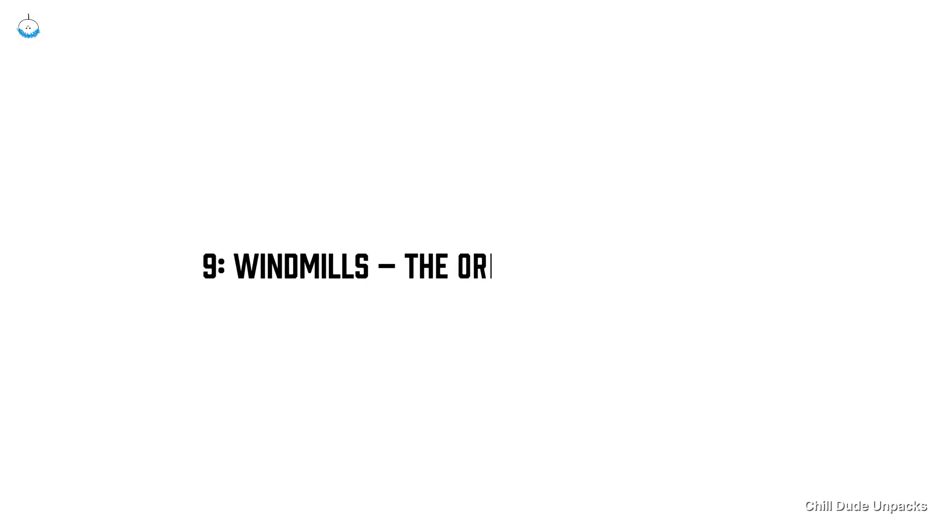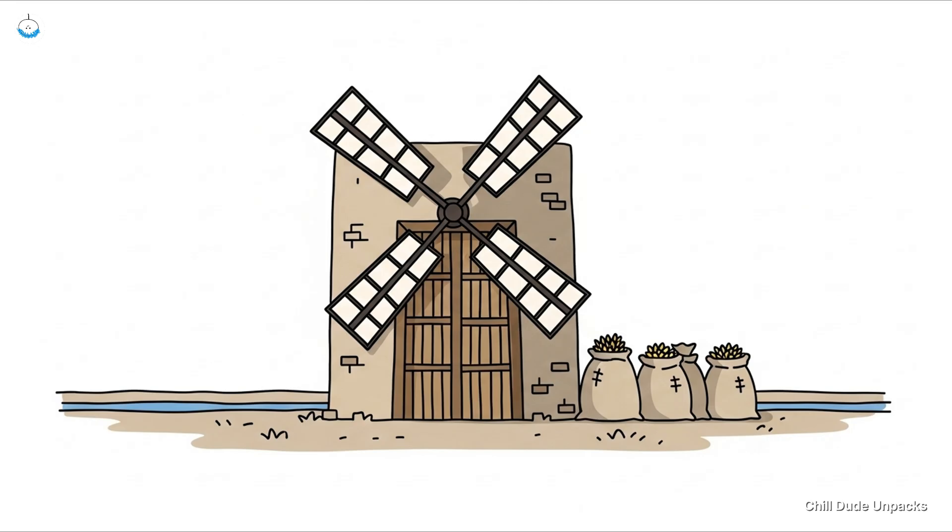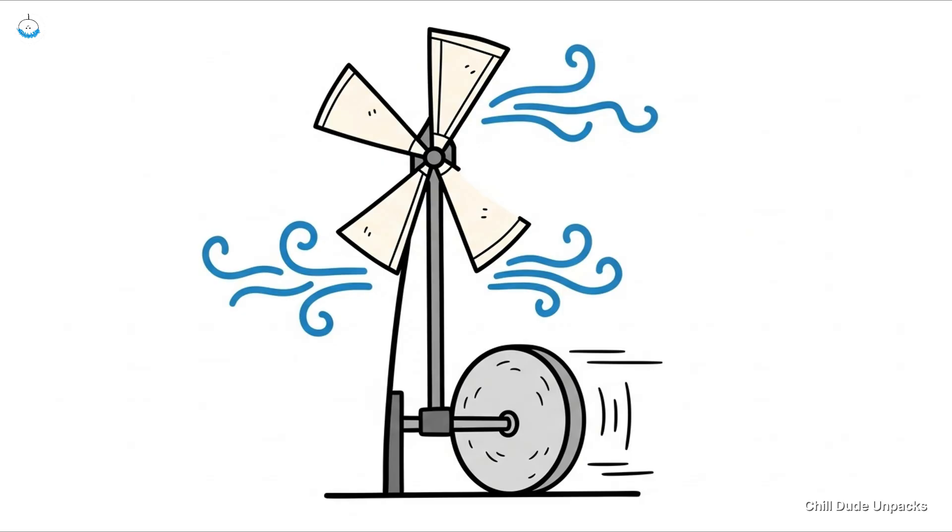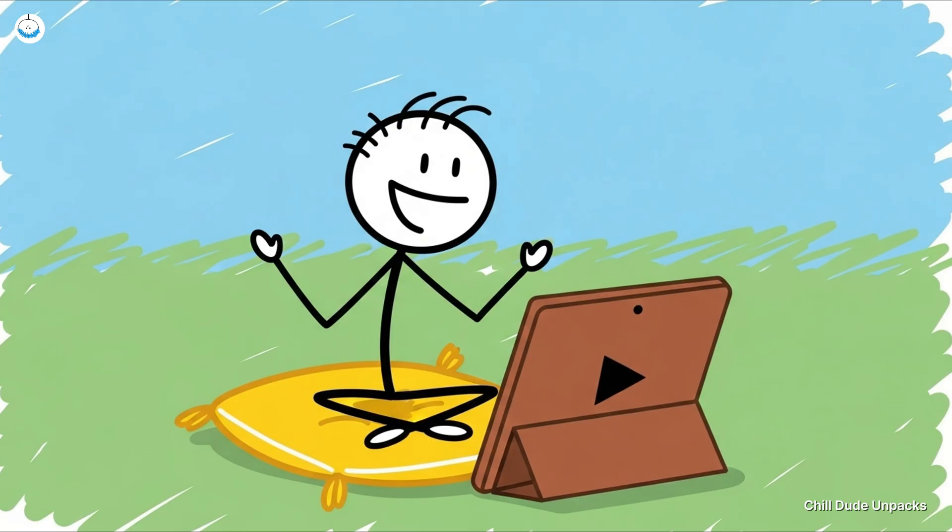Number nine, windmills—the original green energy. Long before solar panels and wind farms dotted the horizon, ancient Persians around 500-900 CE figured out how to harness wind power. Their windmills were vertical axis designs, looking like giant rotating doors, grinding grain and pumping water without a single drop of gasoline. It's hard to overstate how revolutionary this was: literally turning invisible air currents into mechanical muscle. Farmers could produce more food, mill grain faster, and avoid spending hours cranking heavy grinding stones by hand, which meant more time for, I don't know, ancient Netflix.